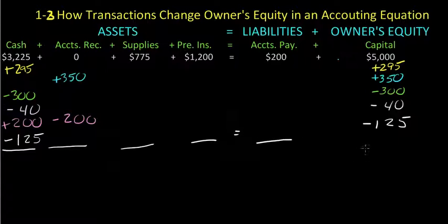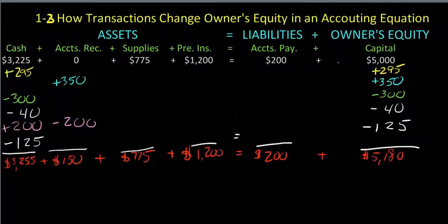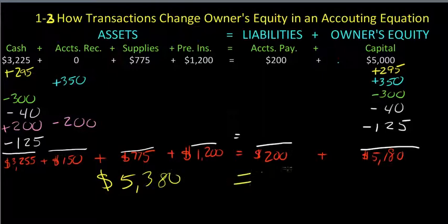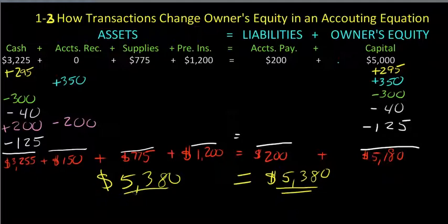Now we have added up all columns after our six transactions. When we add all the asset values together, what we get is $5,380 on the left side, and when we add our liabilities and owner's equity together, we get $5,380. Simply put, assets equals liabilities plus owner's equity - we're in balance. And now we've completed the transactions that affect owner's equity.